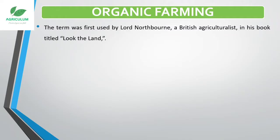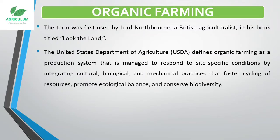The word 'organic farming' was used by Lord Northward, who was a British agriculturist, in his book 'Look at the Land Now.' The United States Department of Agriculture (USDA) defines organic farming as a production system managed to respond to site-specific conditions by integrating cultural, biological, and mechanical practices that foster cycling of resources, promote ecological balance, and conserve biodiversity.